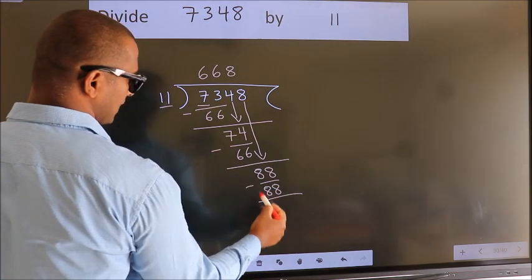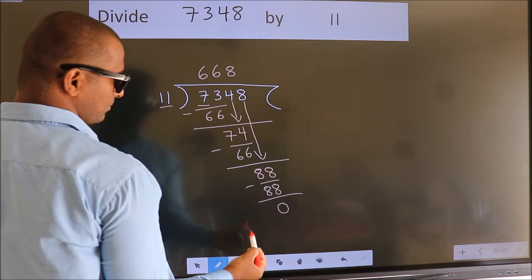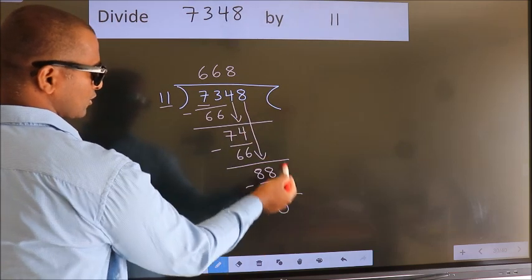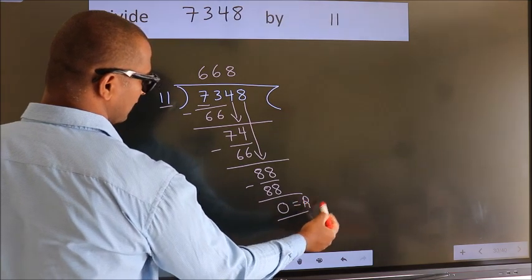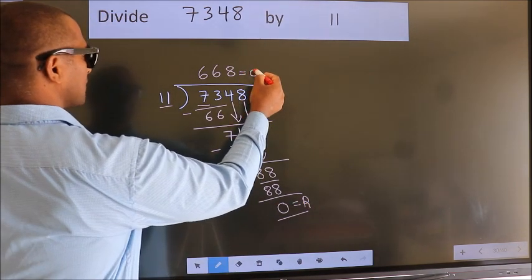Now we subtract. We get 0. No more numbers to bring down, so we stop here. This is our remainder. This is our quotient.